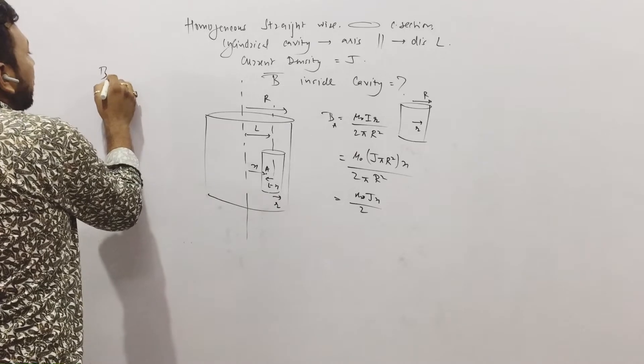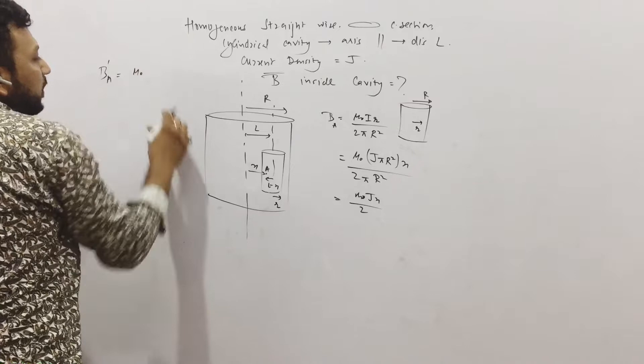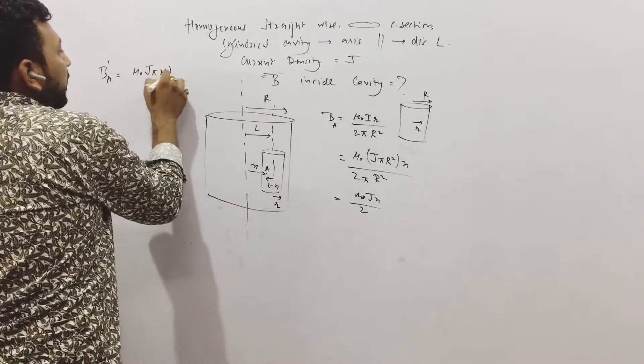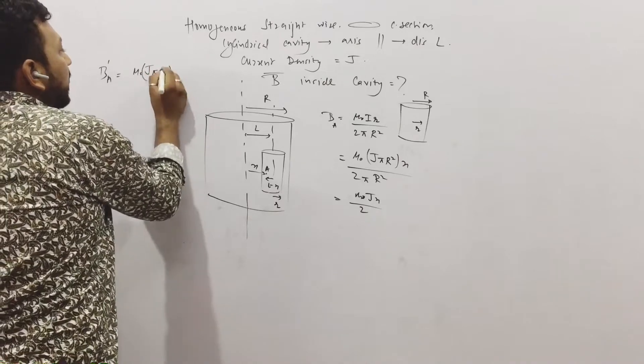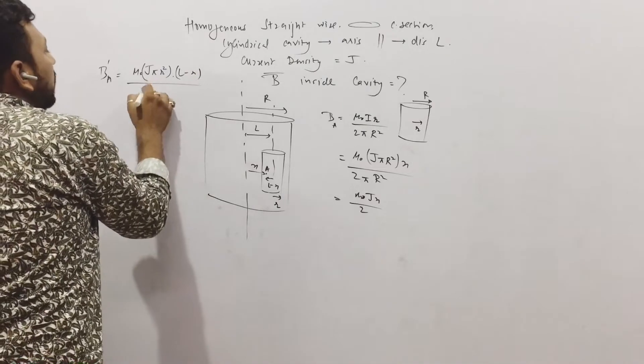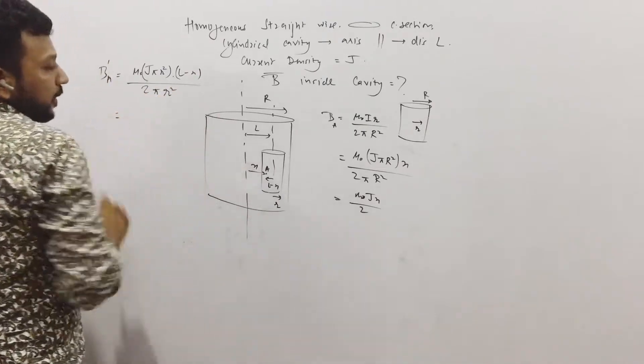That will be B dash A is equal to, again mu naught I. I is how much? The current in the cavity. That is J into pi r square, J into pi r square, into distance is l minus x. Upon 2 pi into how much? Again r square.